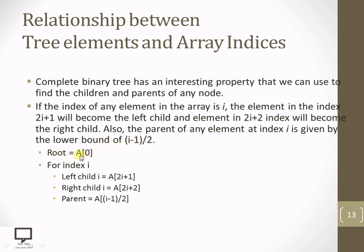If the root is at position 0, then for any element at index i: the left child is present at array position 2i+1, the right child is at array position 2i+2, and to find the parent of the element at index i, the formula is (i-1) divided by 2.